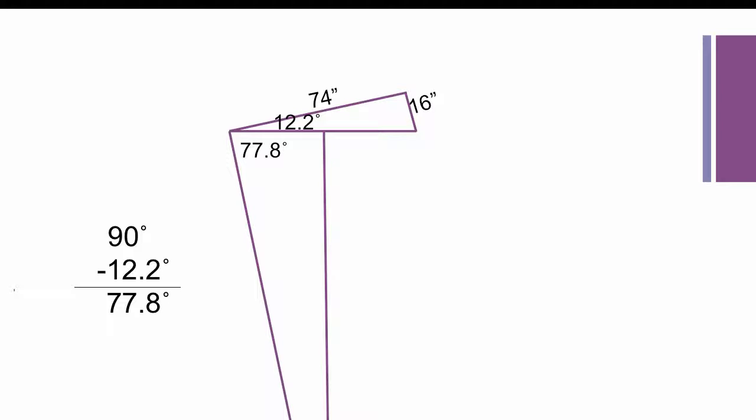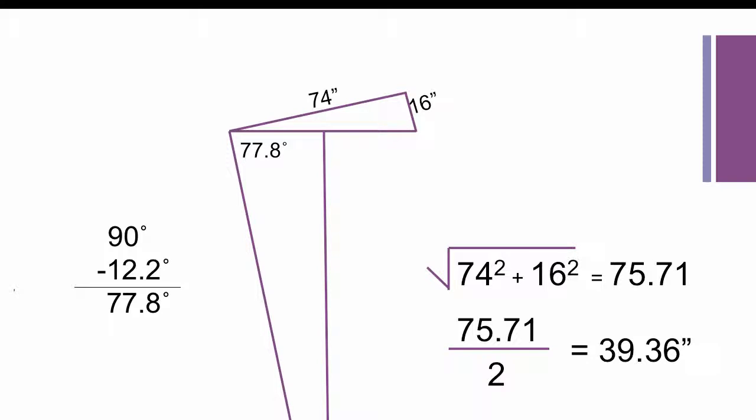So now I have something to work with. What I need to know now is what the length of the chord is. Or what the length of the hypotenuse of the 74-16 triangle is. And we all know the Pythagorean theorem. I took 74 square plus 16 square. I took the square root of that and I got the distance of 75.71. That's all the way across. What I need is half of that. So I divided by 2 and got 39.36.